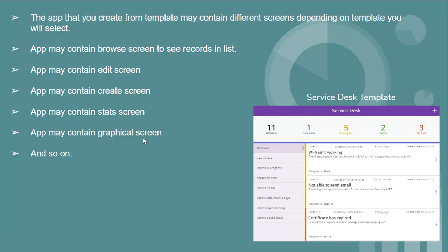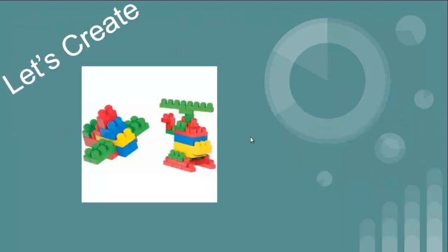First you have to think about what template you are going to use and why, then decide if it satisfies your requirements and needs. If you are still not comfortable with that template, you can use it to gain knowledge and implement your own app. In this video I am going to use the Service Desk template. In this template we can see a header, a plus sign, stats, a left panel or left menu, and a gallery.